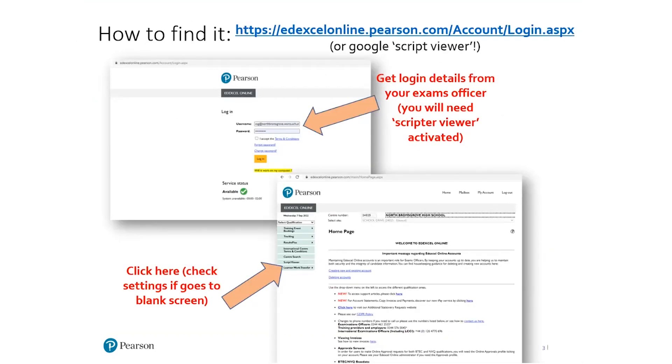So the important thing about this is you have to have an Edexcel online account, which your exams officer can set you up with. Once you're on there, just check that on the left hand side on the drop down or the navigation bar that you can see Script Viewer. And then you'll be able to know that you've got access to it. So it is controlled. To access the scripts, we should say that you do need the permission from the students. And I think we'll cover that in more detail as well.